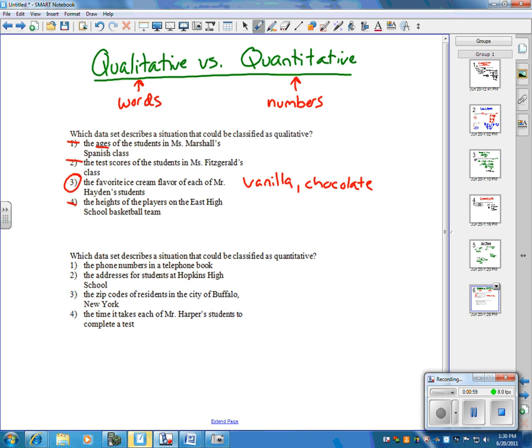On top of that, we have quantitative, just numbers. This one was kind of tricky, and a lot of people had problems with this, because each of these does deal with numbers. But with quantitative, it has to be measurable. They have to be measurable numbers.